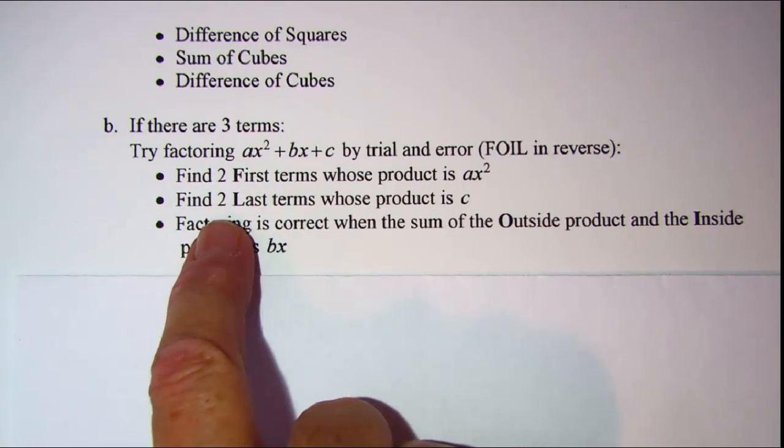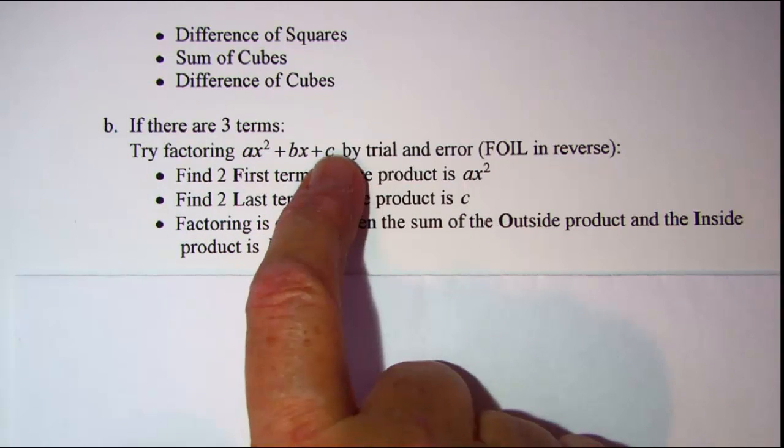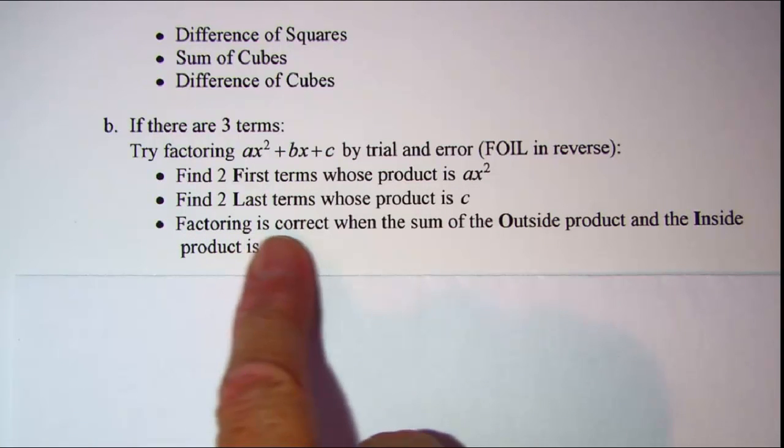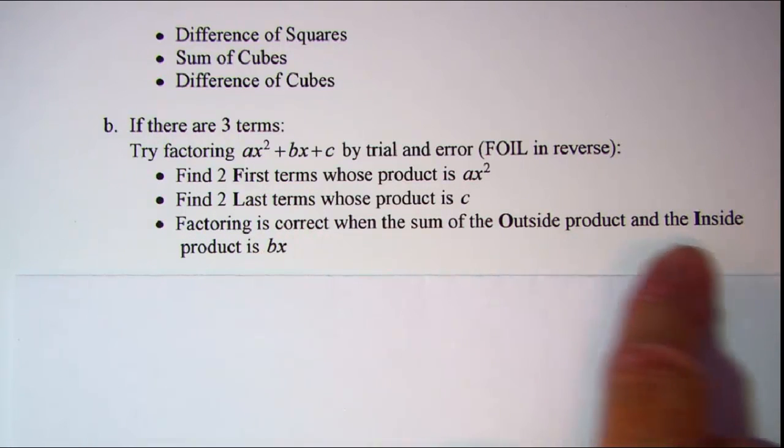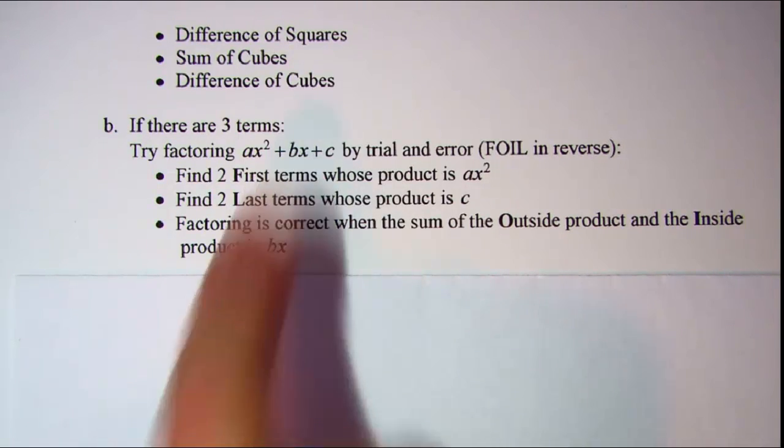Find two last terms whose product is c, which is the last term of the trinomial. You'll know if your factoring is correct when the sum of the outside product and the inside product is bx, which is the middle term.